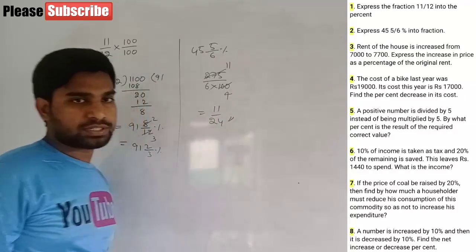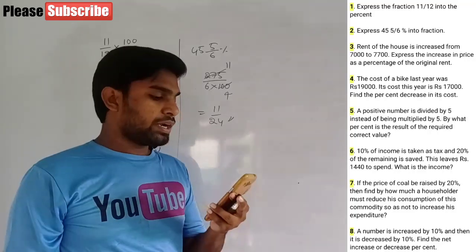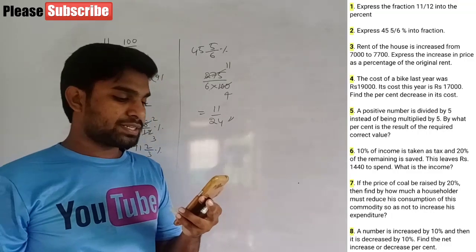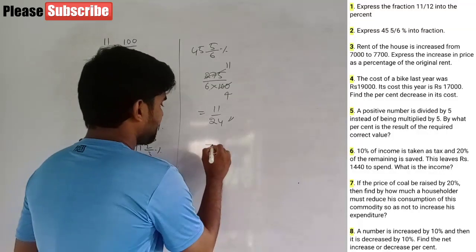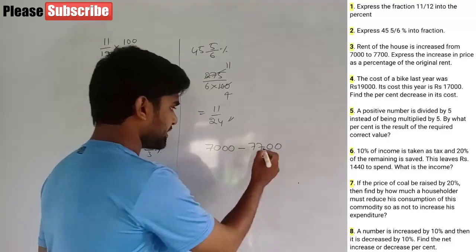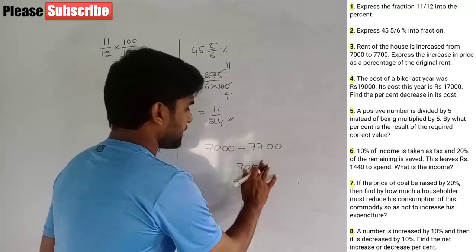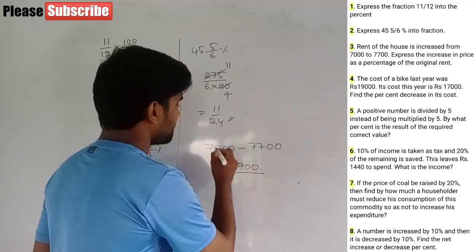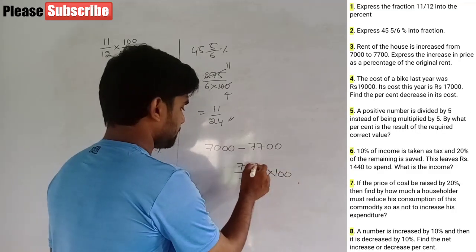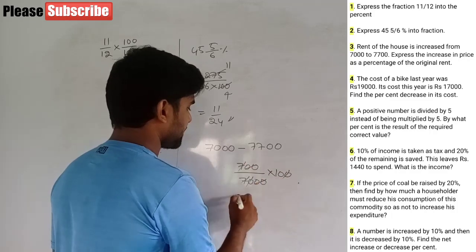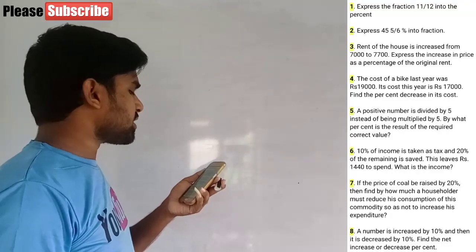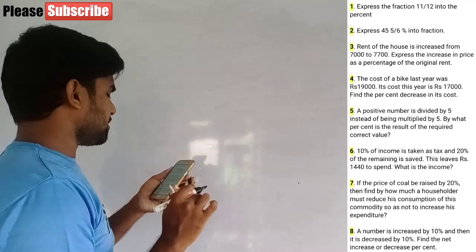Next question: the rent of a house is increased from 7000 to 7700. Express the increase in price as a percentage of the original rent. The increase is 700. So the percentage increase is 700 divided by the original price 7000, then multiply by 100.